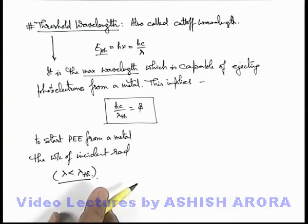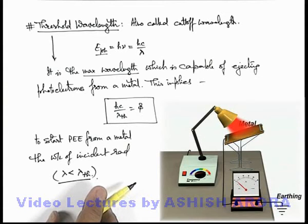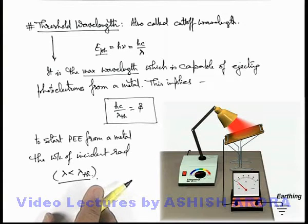Here you can see a realistic situation: there is a metal surface on which light from a lamp is incident. You can see initially a red light is incident, which has a high wavelength among the whole visible range.